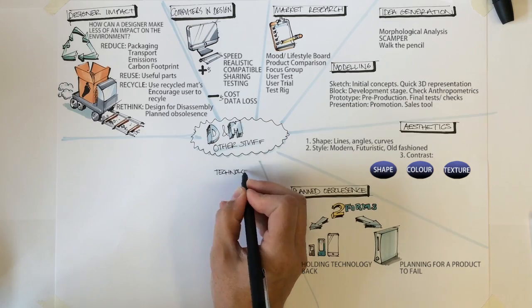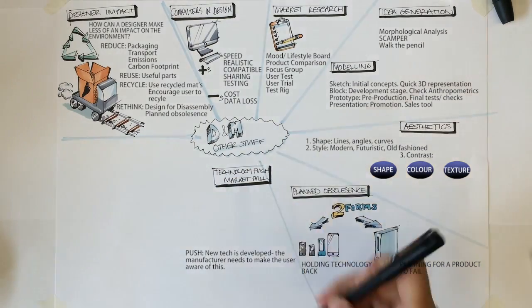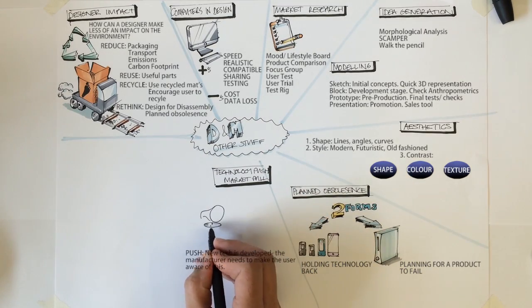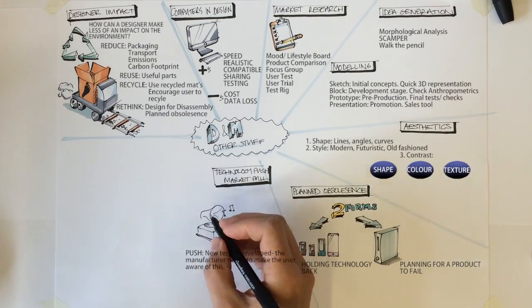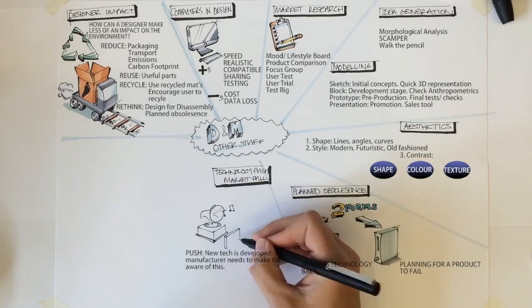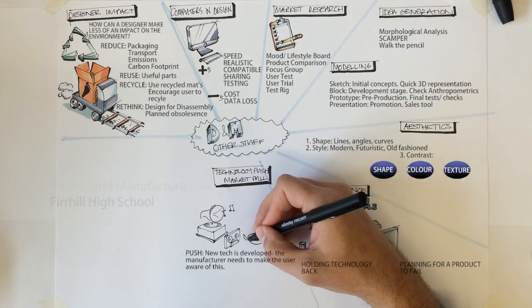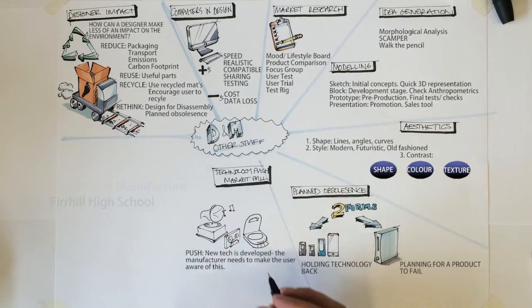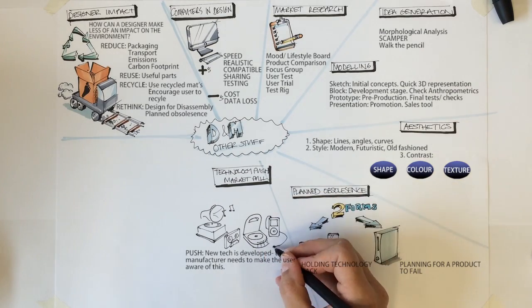Technology push. Market pull. Push: When a new technology is developed, the consumer will have no idea it even exists. The manufacturer has to convince the user that the new tech is worth shelling out for. For example, MP3s. The consumer would have to be convinced of the reason to move from CD players to MP3 players such as iPods. They would use advertising, product placement and celebrity endorsements to try to convince people to make the switch.